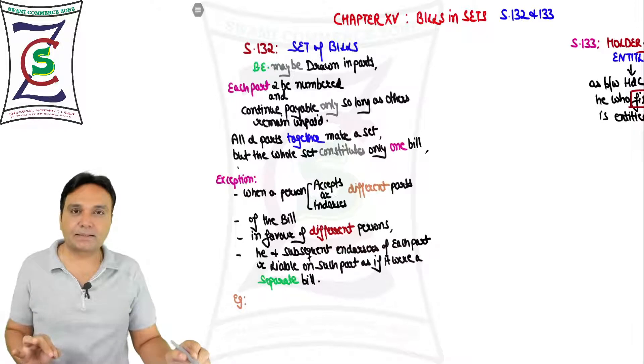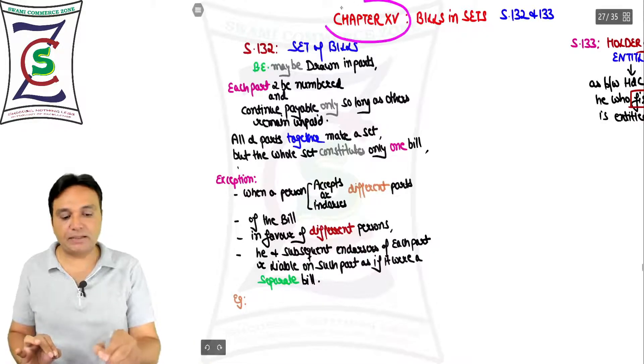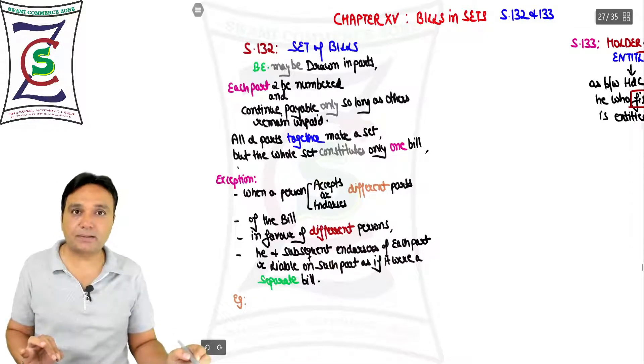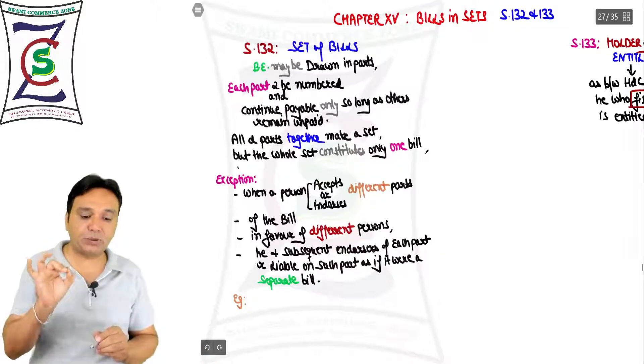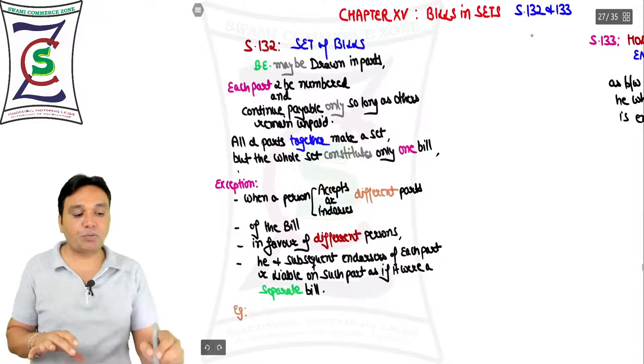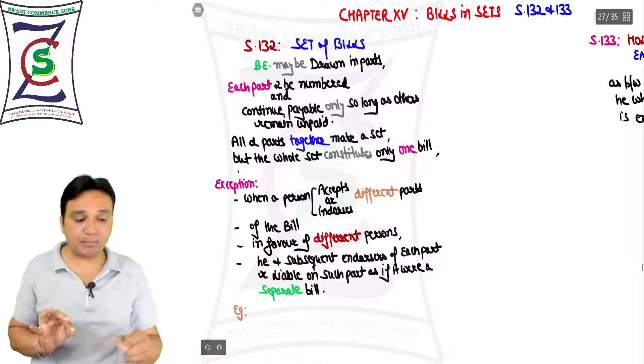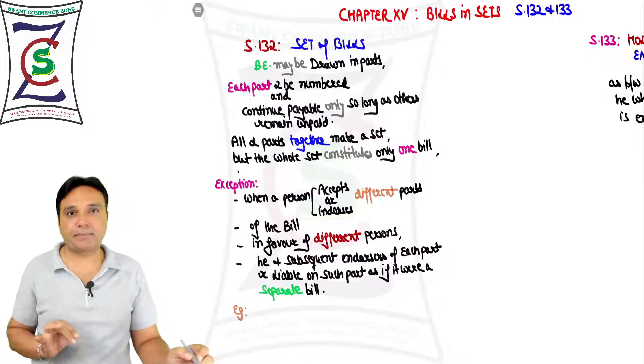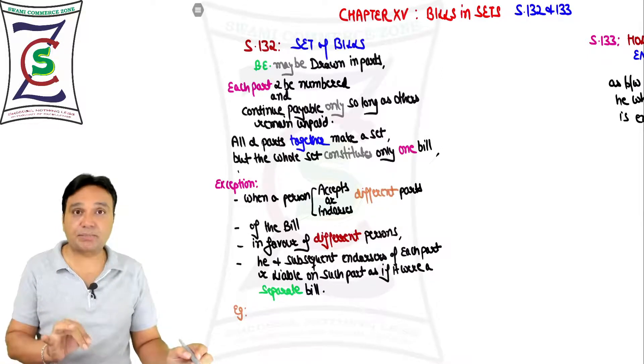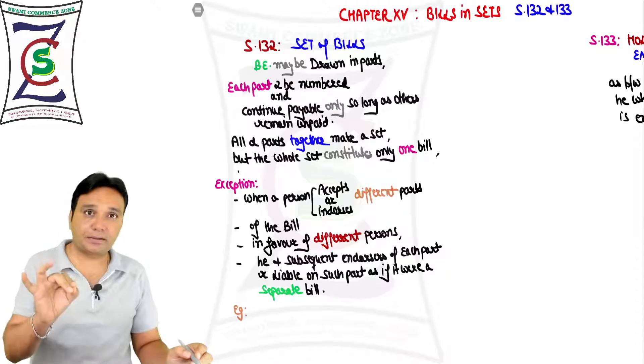Hello students, Chapter 15 of the Negotiable Instruments Act deals with bills in sets, comprising only two sections - Section 132 and 133. Firstly, we have never gotten a question on this particular chapter yet in the CA Inter exam.